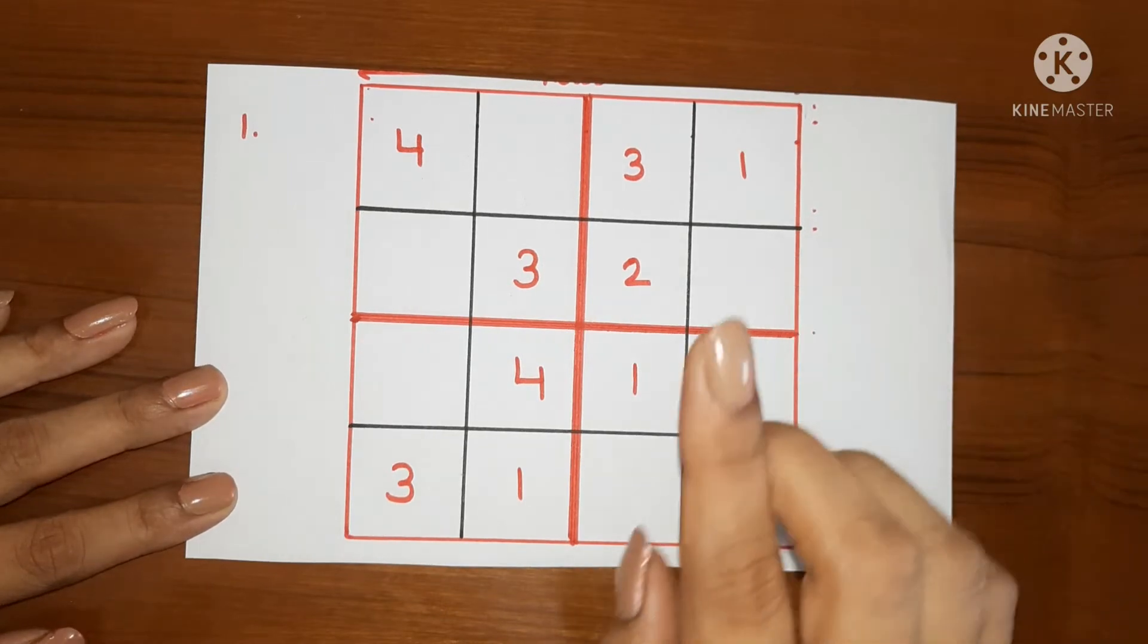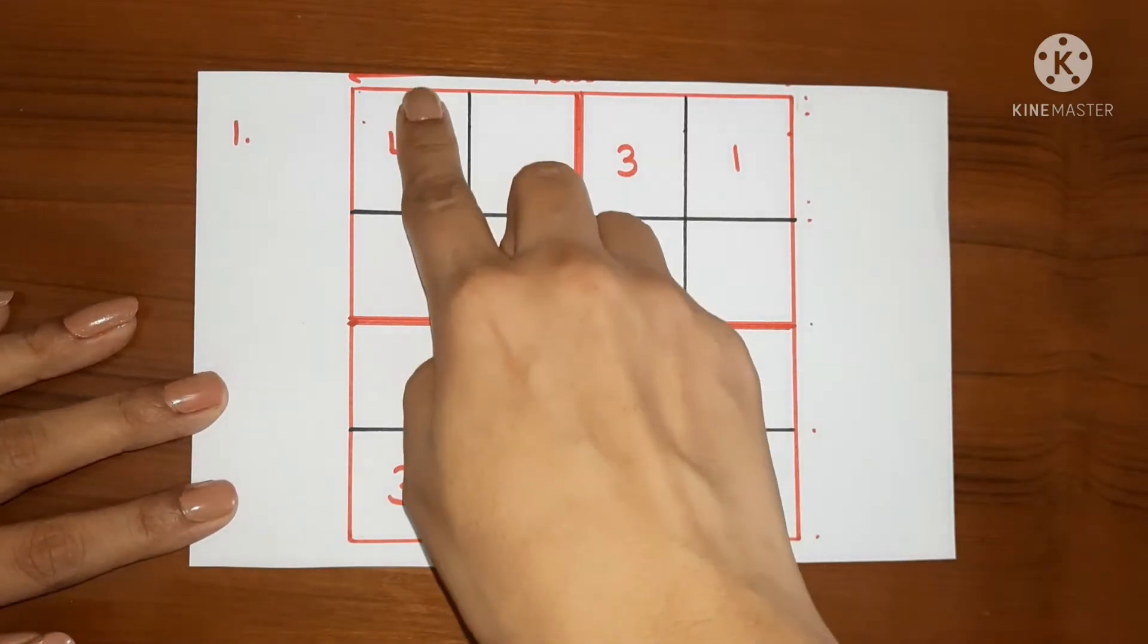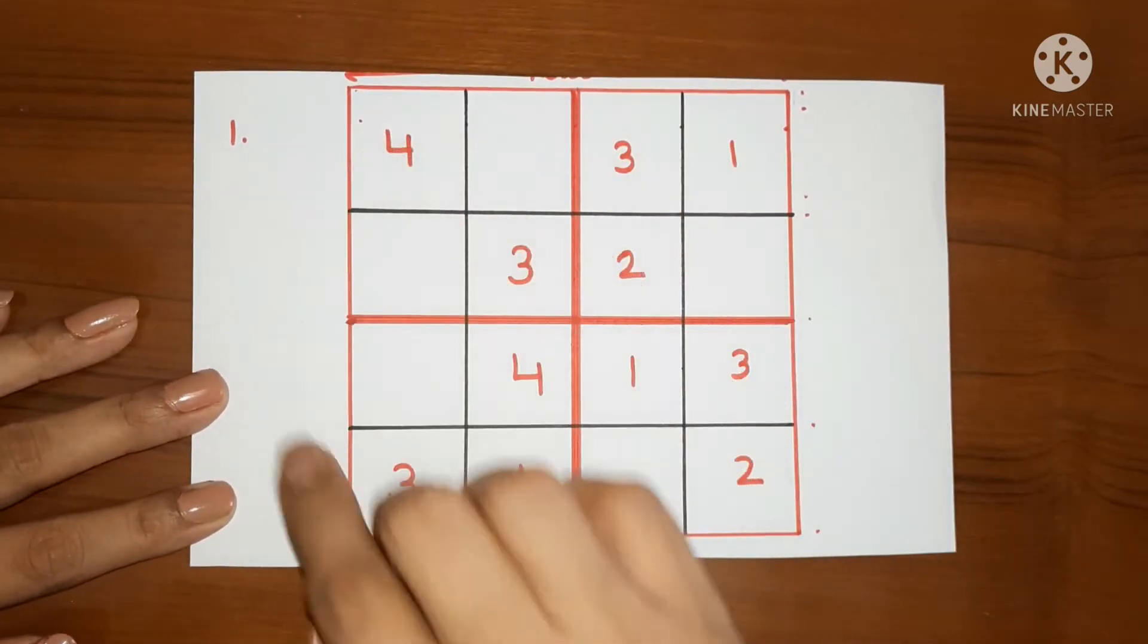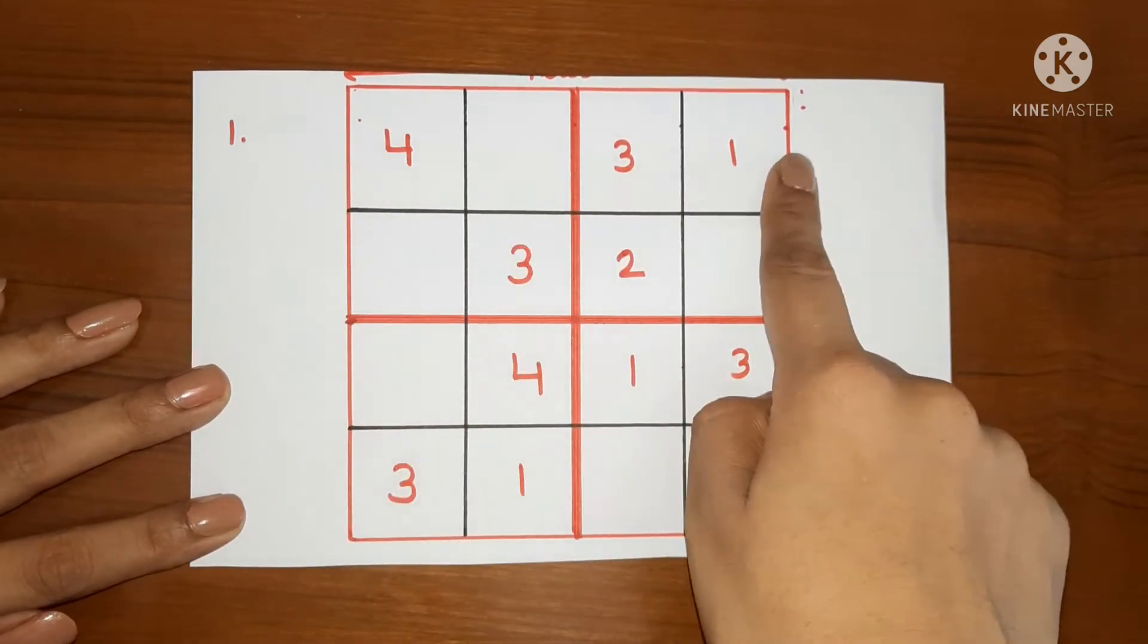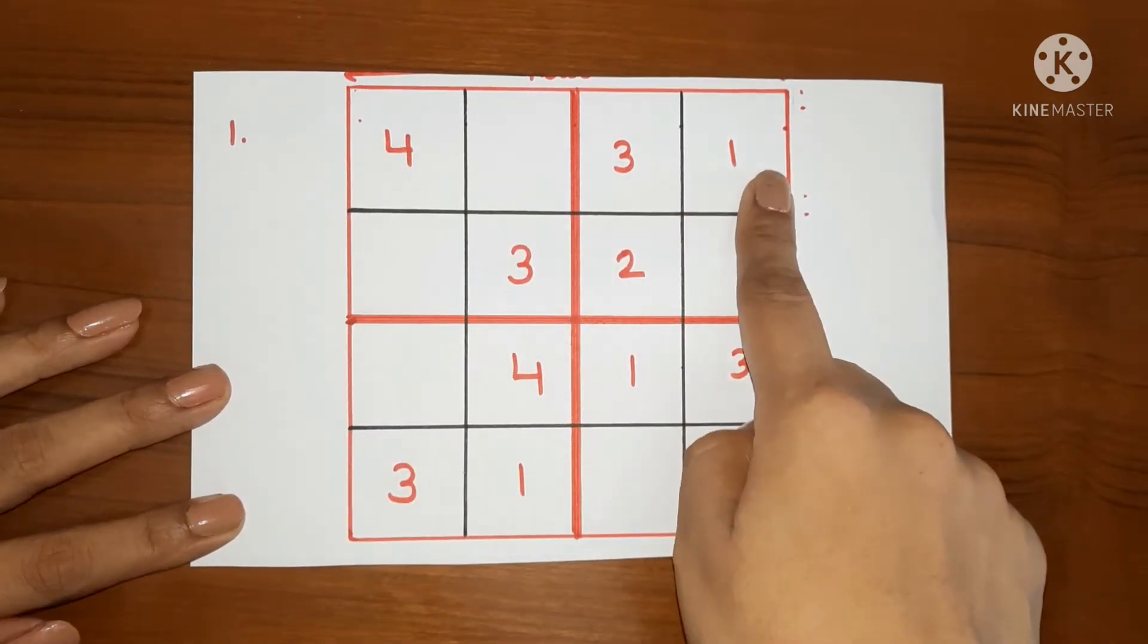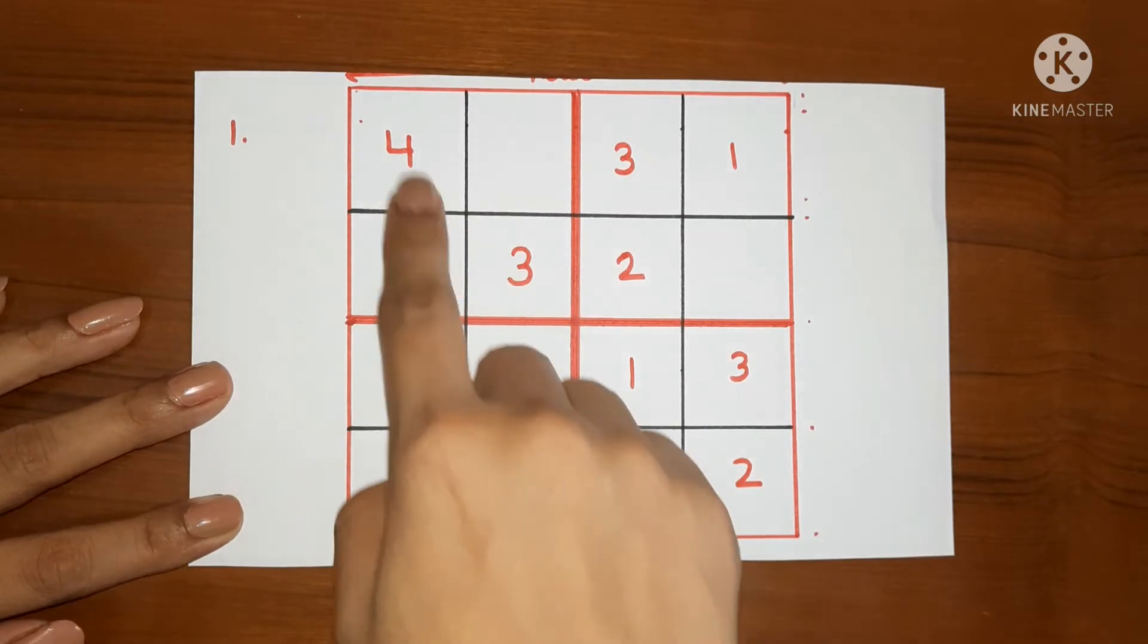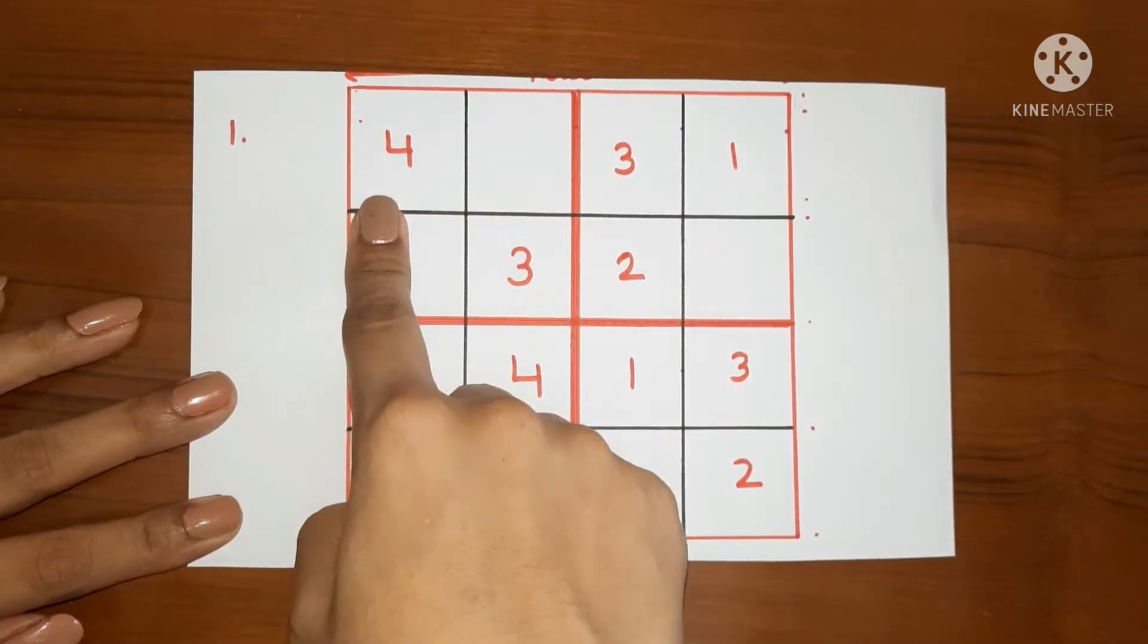We have to use numbers from 1 to 4 only to solve this puzzle. Every column and every row will have 1 to 4 numbers only and no number should be repeated in the same line, either column-wise or row-wise. Same goes for the box. Every box will contain 1 to 4 numbers and no number should be repeated in the same box.